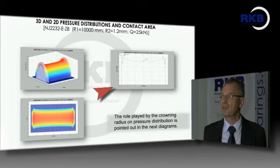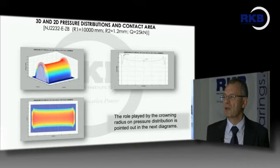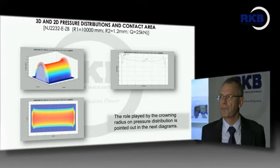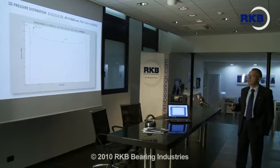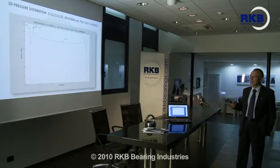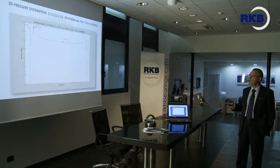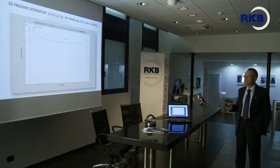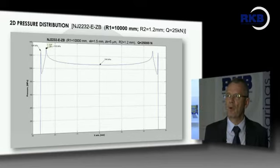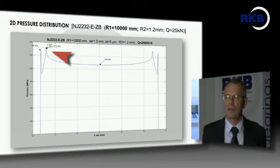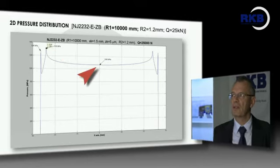The numerical simulation of the pressure distribution is shown in 3D and in two dimensions. The role of the crowning radius will be presented in the following diagrams. Using a radius of about 10,000 millimeters and a load of 25 kN is a good design, because there is only a very small increase of pressure at the end, very close to the median value.